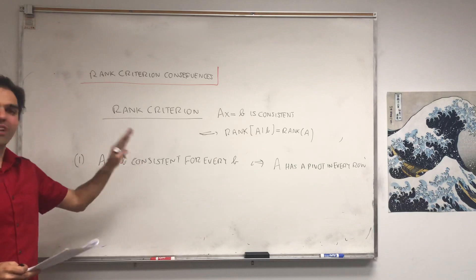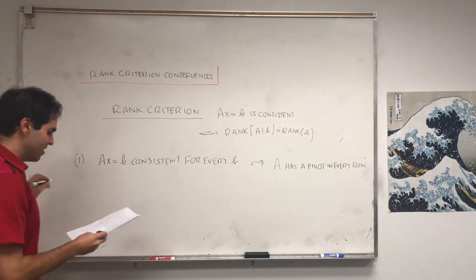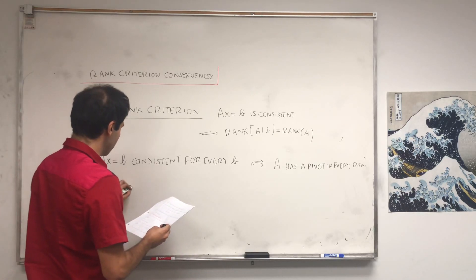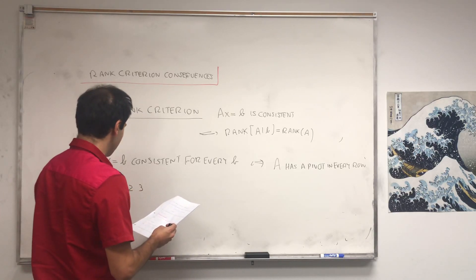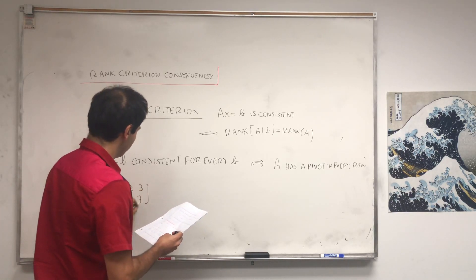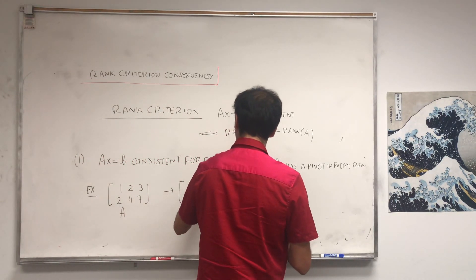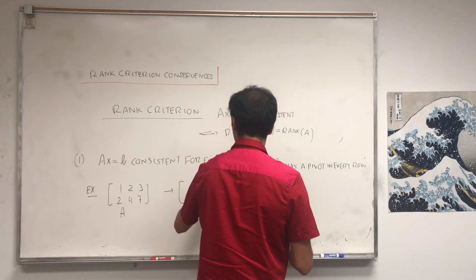So just as an illustration, suppose you row reduce this matrix [1, 2, 3; 2, 4, 7]. And you know that you row reduce it to [1, 2, 3; 0, 0, 1].